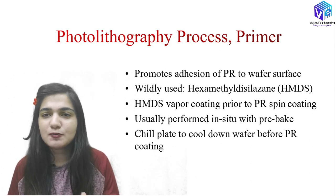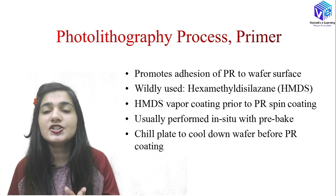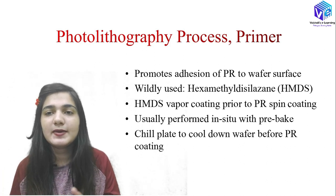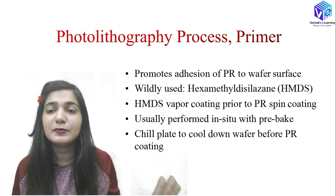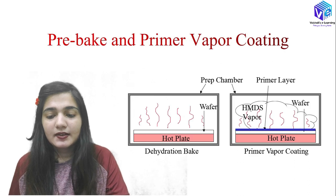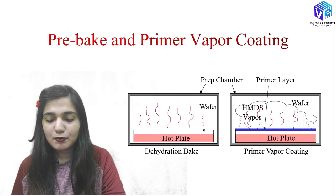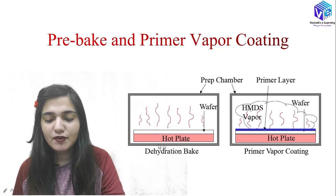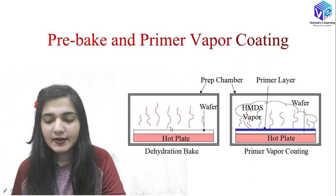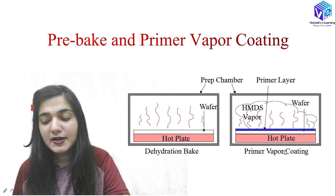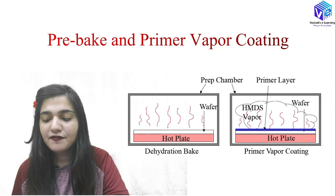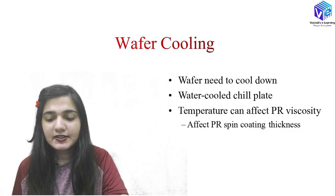The PR dispenser nozzle spreads photoresist on the wafer. Initially we do PR suck back so the photoresist spreads evenly when the spindle rotates with no non-uniformity. After the photoresist is spread uniformly, we switch the PR dispenser nozzle back on. Excess photoresist spreads to the edges and we get a uniform photoresist layer. Once PR is spread over the full surface it starts falling off from the edges.